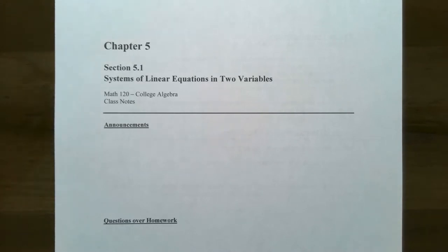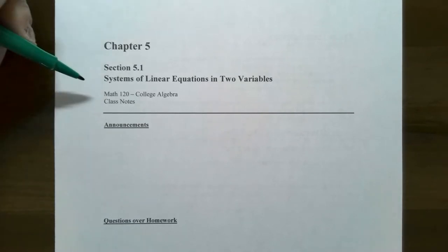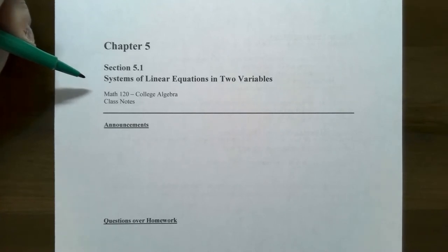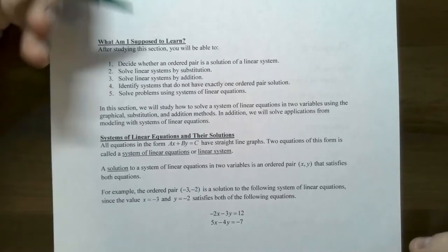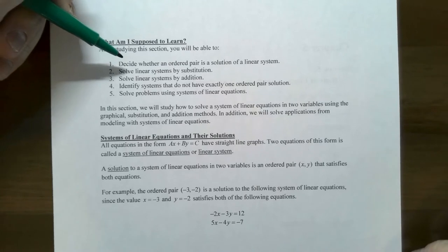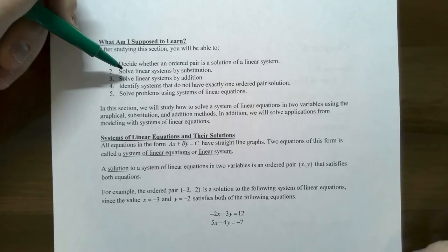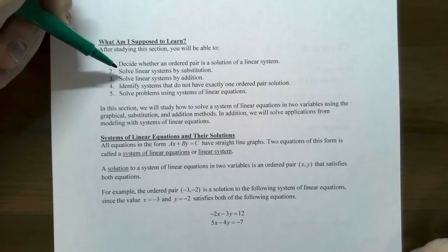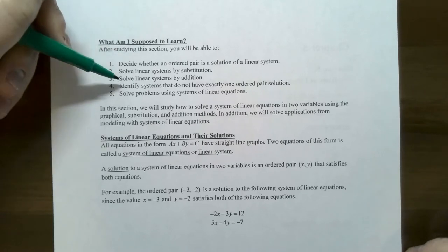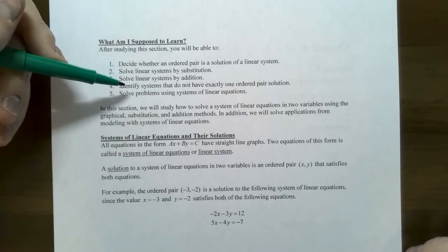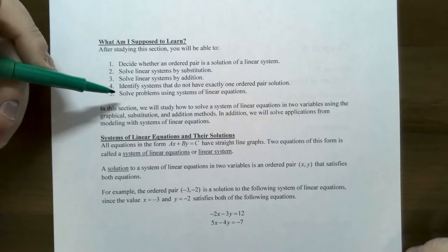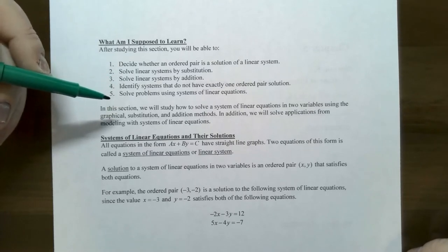Hi everyone, it's Professor Pemberton. In this video, we're going to look at how to solve systems of linear equations in two variables using the addition or sometimes called the elimination method. From the previous video, we talked about how to decide whether an ordered pair is a solution to a linear system, and we also used the graphical and substitution methods. In this video, we'll also identify systems that do not have exactly one ordered pair solution and solve problems using systems of linear equations within applications.